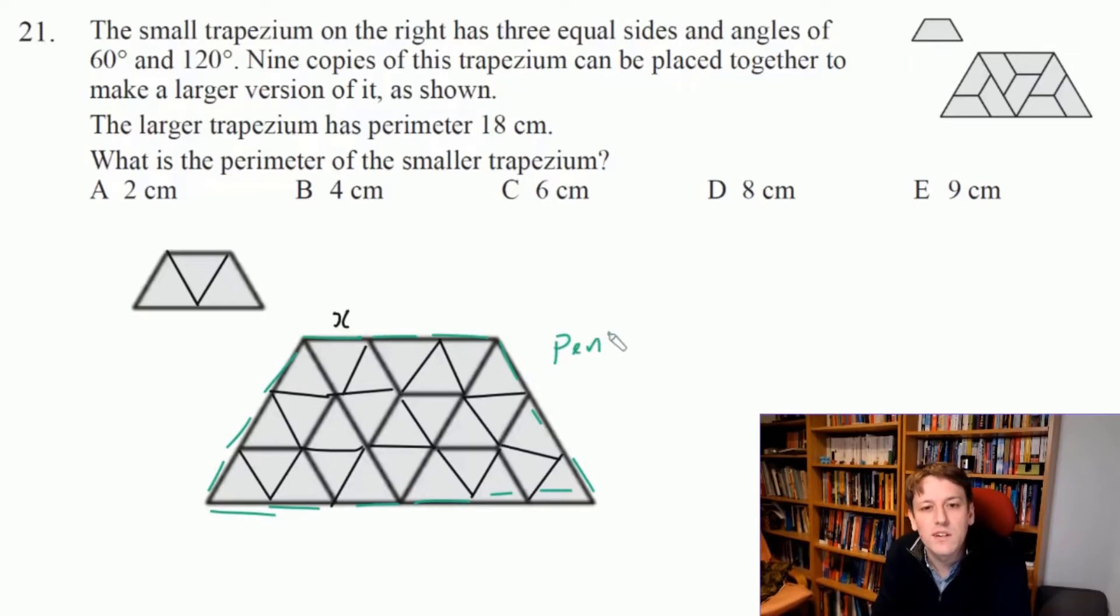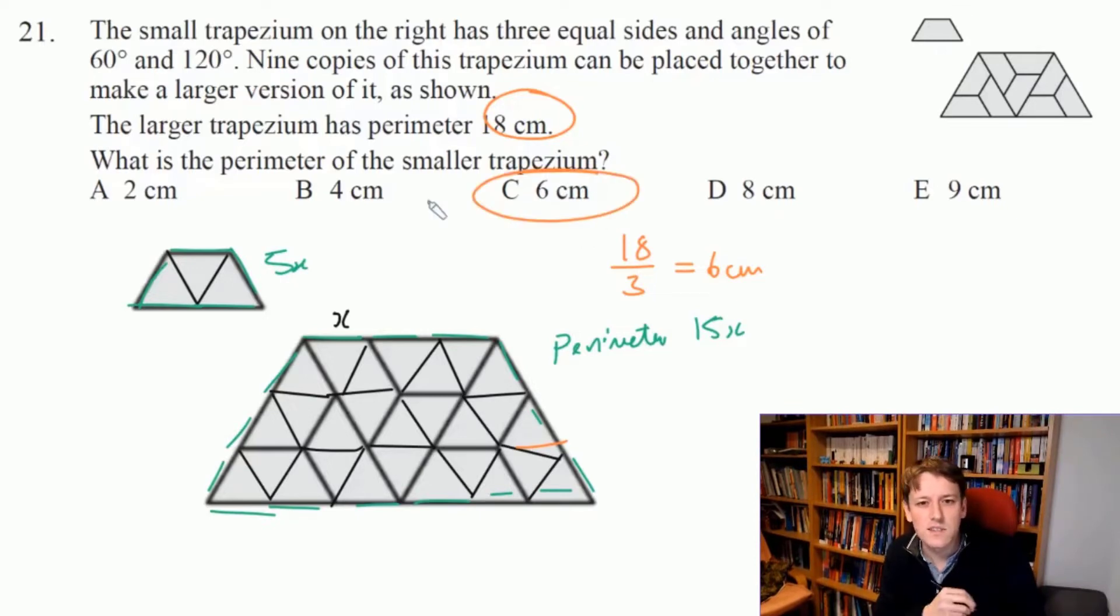The perimeter of the big trapezium is 15x, whereas for the smaller one it's 1, 2, 3, 4, 5x. So the perimeter of the small trapezium is a third of the perimeter of the large trapezium. We know that was 18, so I just have to do 18 divided by 3 and that gives me 6 centimeters. 5x is a third of 15x. If you count the small sides of the small triangles that make up each of the perimeters, we get that argument and the answer is C, 6 centimeters.